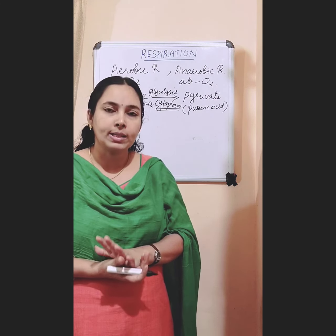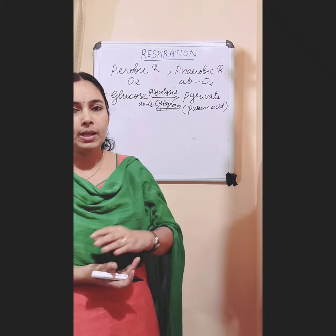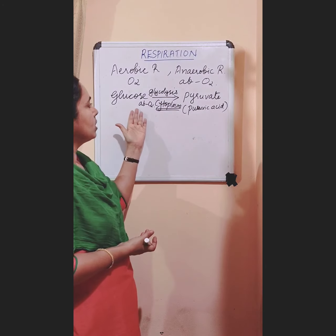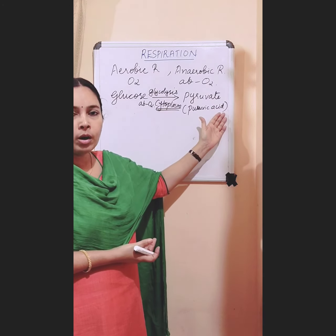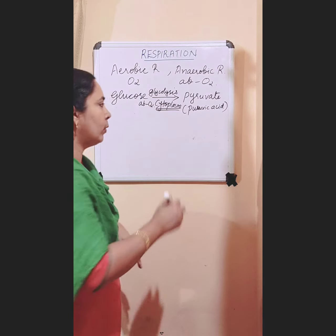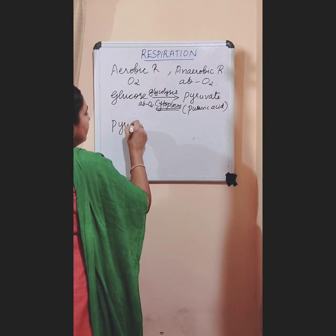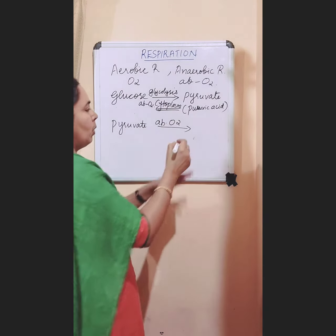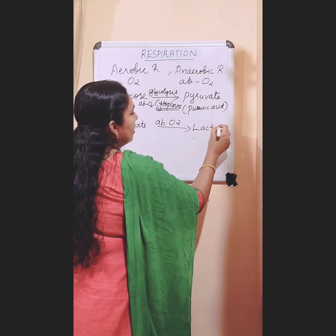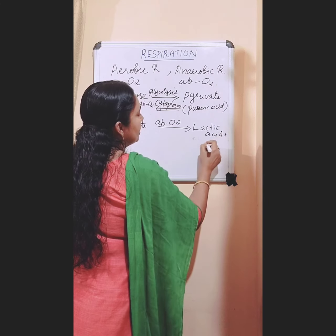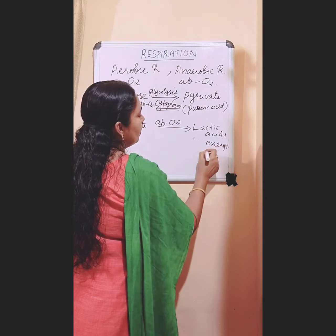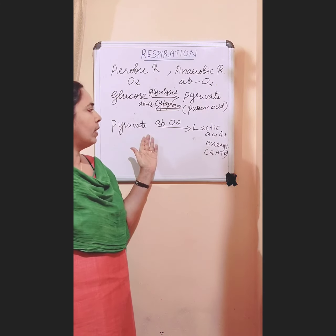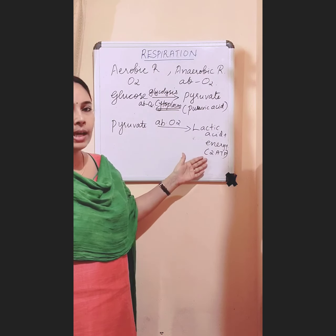We can look at what happens in our muscle cells during anaerobic respiration. The first step is the same: the 6-carbon compound glucose is broken down into the 3-carbon compound pyruvate. Then this pyruvate, again in the absence of oxygen, is broken down into lactic acid plus energy. Here also only a less amount of energy — about 2 ATP molecules — are produced. So pyruvate is broken down to give lactic acid and energy.